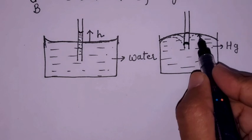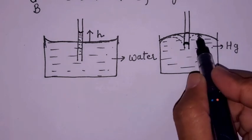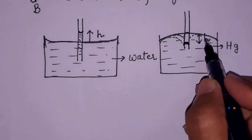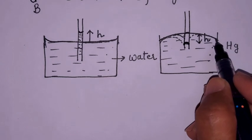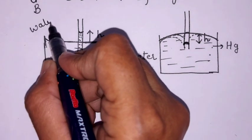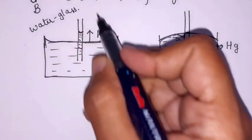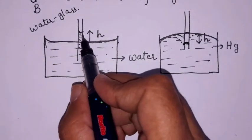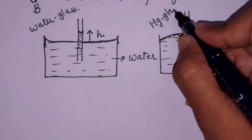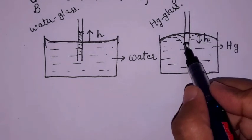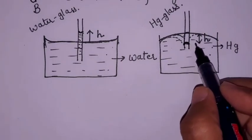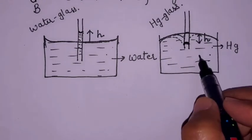The depth of depression of mercury from the outside mercury level is called the fall in the capillary tube. With the water and glass pair, the level rises in the capillary tube. With the mercury and glass pair, the mercury level falls in the tube, which is also called depression in the capillary tube.